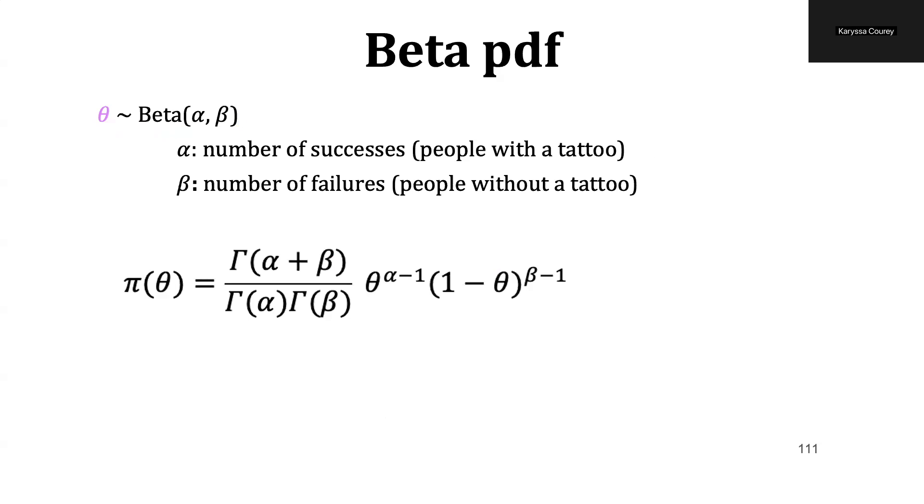Alpha is the number of successes, or in other words, the number of people with a tattoo. Again, this is our prior belief, so we have not actually viewed any data yet. It's what we would expect to see. And beta here is the number of failures, or in other words, the number of people without a tattoo.